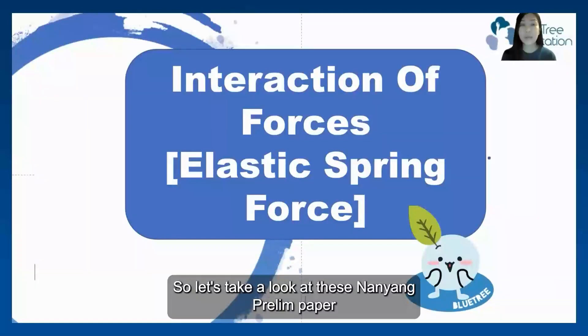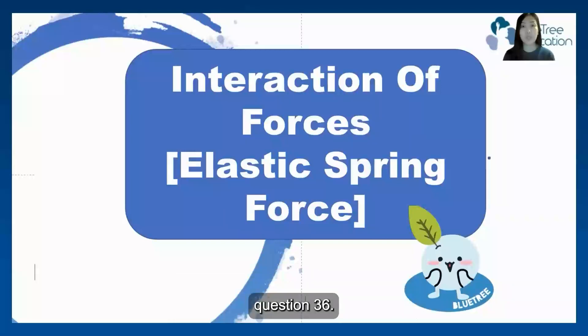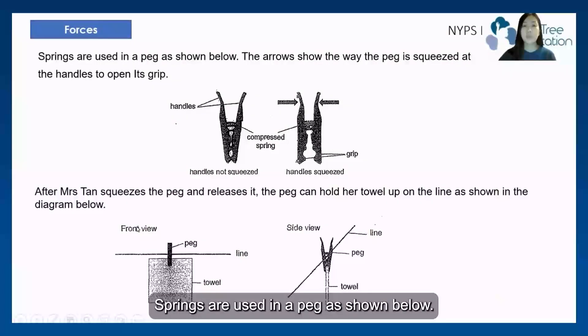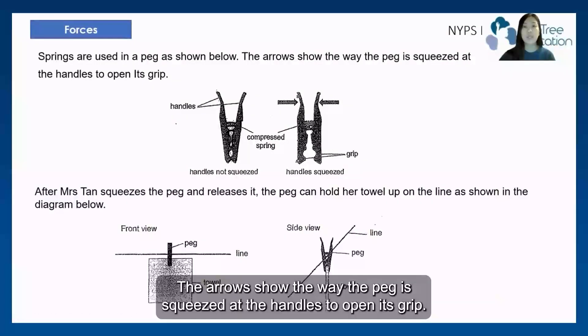So let's take a look at this Nanyang Preliminary Papers, question 36. Springs are used in a peg as shown below. The arrows show the way the peg is squeezed at the handles to open its grip.